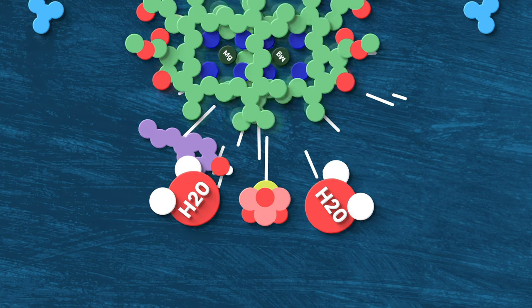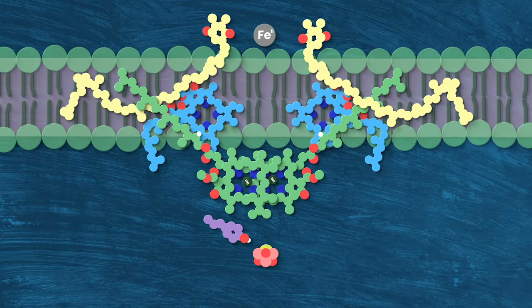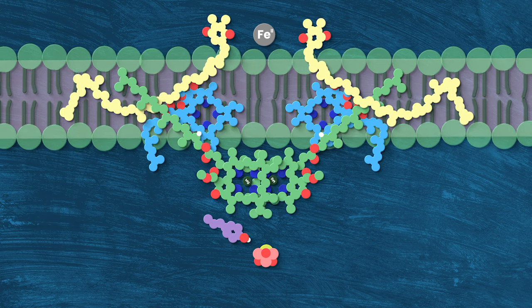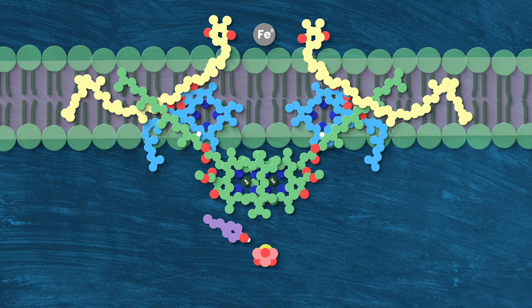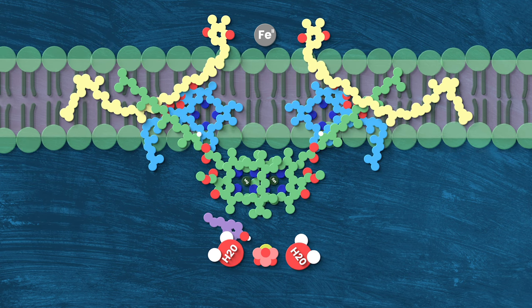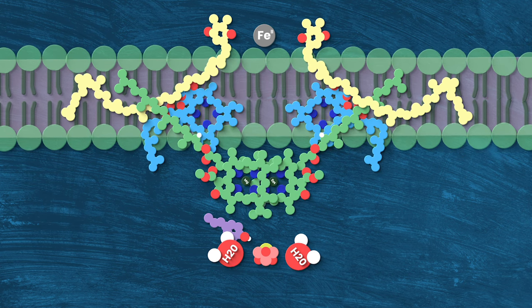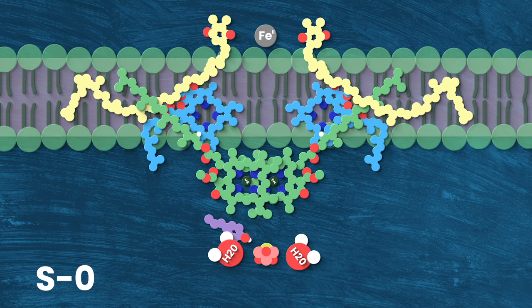And so now, we have the cast of characters set. We've got P680, getting energized by sunlight and its antenna complexes. We've got the oxygen evolution center set up just right for water to get blasted apart by that energy. So let's start the show. Welcome to the Kok Cycle. This starts with two water molecules entering the system and associating with the OEC. This is the S0 state, the calm before things get wild.